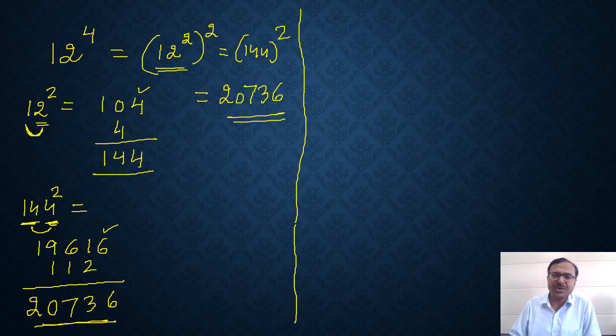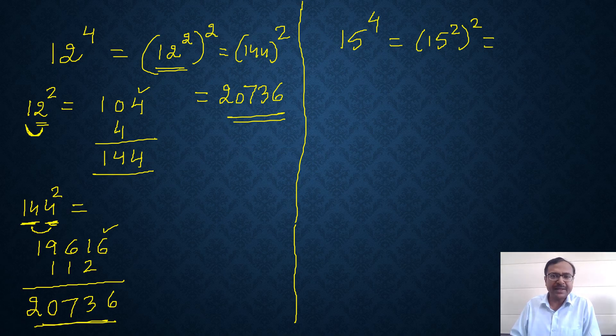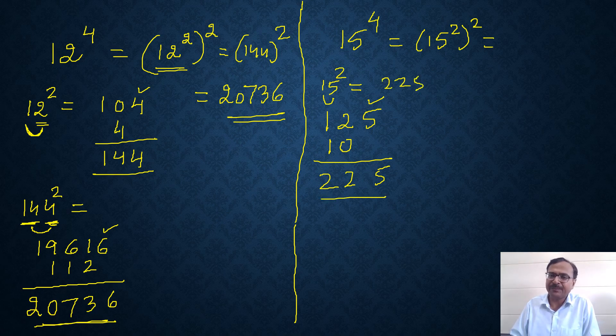I'll tell you through another example. Suppose you have the number 15 and you want to find the fourth power of 15. So you will be doing 15 square whole square. If you know 15 square, very good. If you don't know it, then how do you find 15 square? 1 square is 1, 5 square is 25, 1 into 5 is 5, the double is 10. I will leave one digit and write 10 here, and then add vertically to get the square of 15, which is 225.